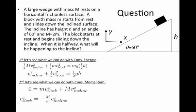Since the incline weighs twice as much as the block, we substitute in for that ratio and find that the x-component of velocity for the block equals minus two times the x-component of velocity for the incline. In other words, the block will be moving faster than the incline, which makes sense because the incline is quite heavy. Since the incline is only moving in the x direction, its x-component of velocity in magnitude equals its velocity, so the x-component of the block's velocity equals minus two times the velocity of the incline.